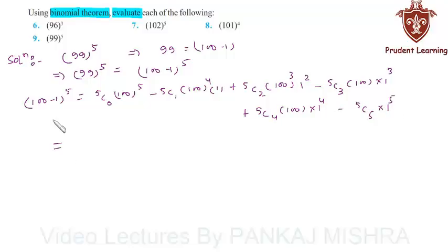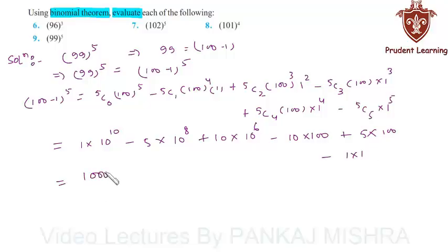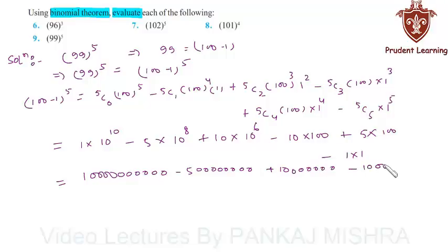This is equal to: 5C0 is 1, into 100⁵ which is 10¹⁰, minus 5C1 is 5, into 100⁴ which is 10⁸, plus 5C2 is 10, into 100³ which is 10⁶, minus 5C3 is 10, into 100², plus 5C4 is 5, into 100, minus 5C5 is 1, into 1⁵ which is 1. So this gives us: 1 followed by 10 zeros, minus 5 followed by 8 zeros, plus 10 followed by 6 zeros, minus 10,000, plus 500, minus 1.